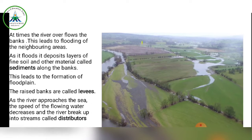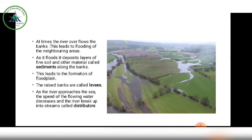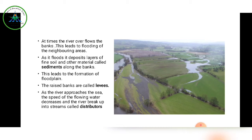The deposited sediments are very fertile. This leads to the formation of a flood plain — the plain formed due to flooding. In the picture you can see the gray-green color portion near the river bank, which is the flood plain. The raised banks formed along the river are called levees — the banks that are raised or elevated up.